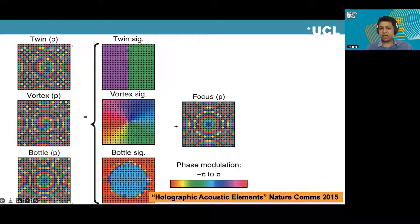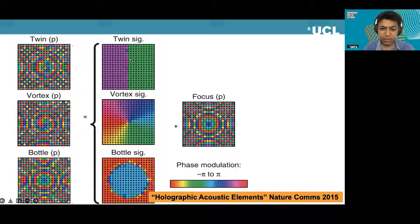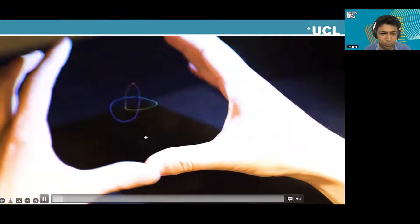You can compute this focal point without fancy optimization — simply compute the focal point and apply the signature. Computing the focal point is really, really fast and easy. A GPU can do it 40,000 times a second or even more. We programmed an FPGA to do that, added the twin trap signature to it, and can go so fast that you can see the particle moving — a single polystyrene bead moving at 40,000 updates per second.